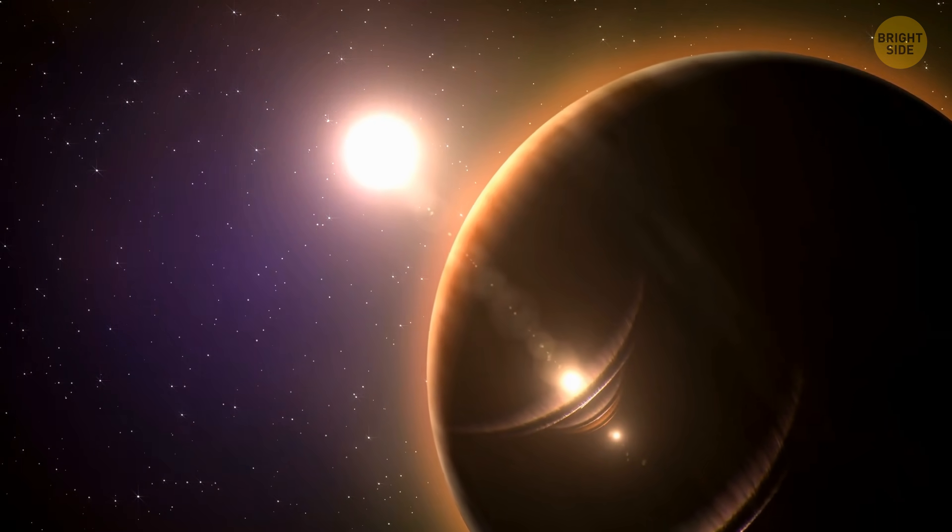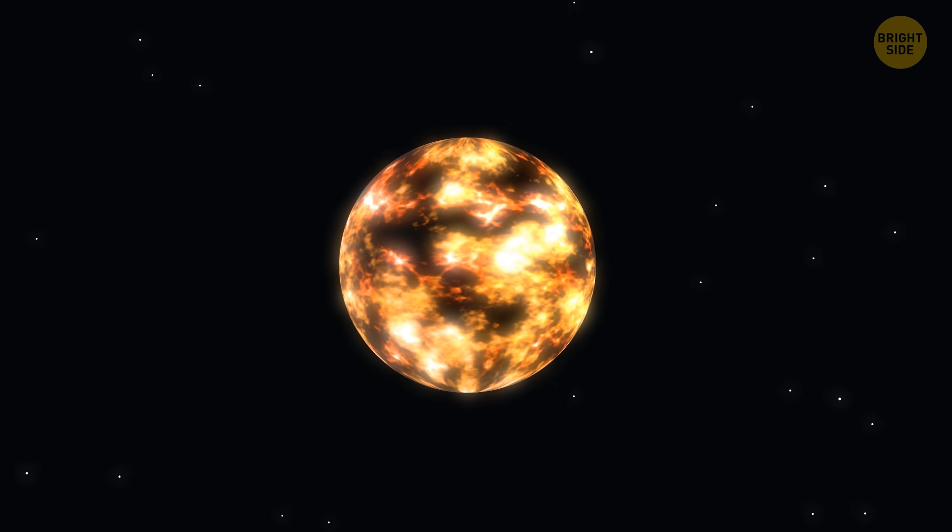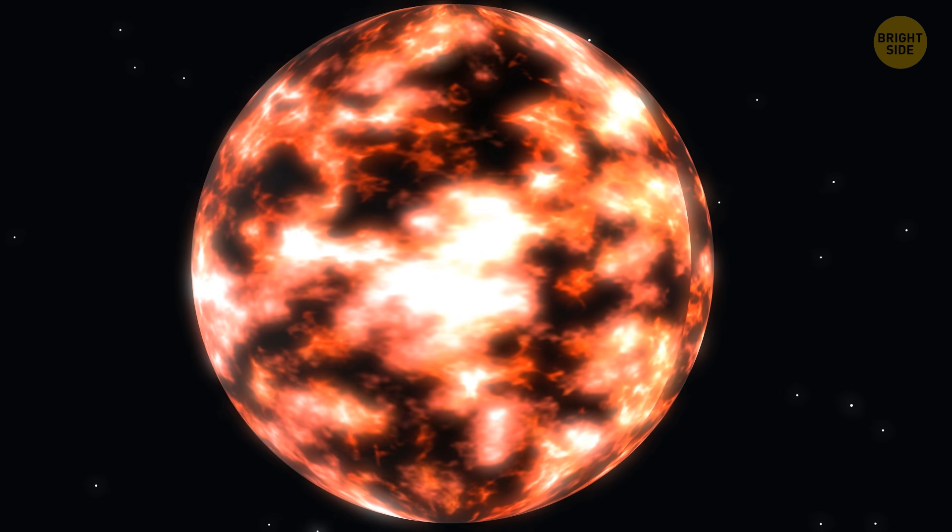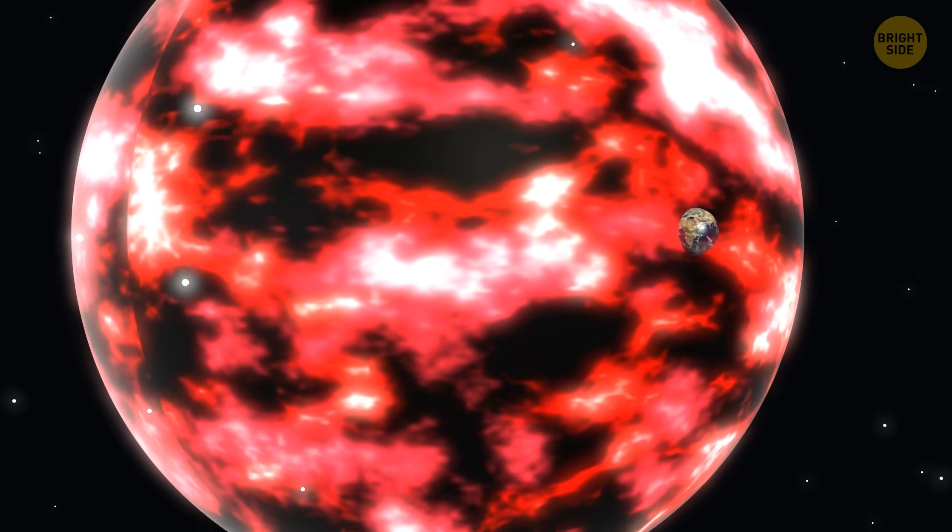Now pay attention, because there's a pretty good chance we're all going to miss this. First, the sun will puff up and become a red giant, exploding like a balloon. It will grow so big that it will swallow up the inner planets, including our beloved Earth.